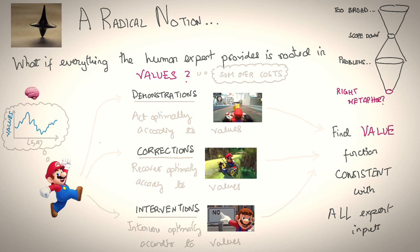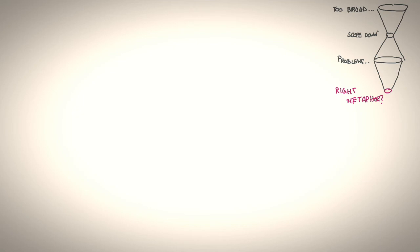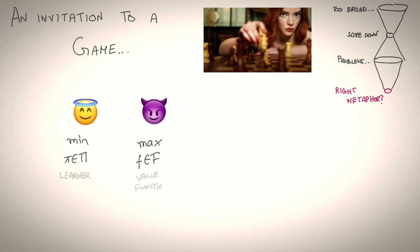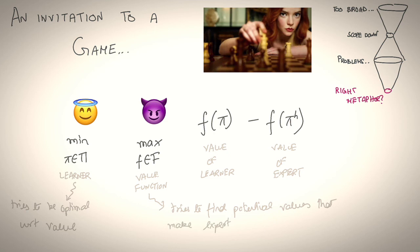So how does one act upon this insight? We invite you to think of imitation learning through the lens of a game. This is a game between two players, a learner and an adversary. The learner reasons over a space of policies pi, and the adversary reasons over a space of value functions. The payoff of the game is the value of the learner minus the value of the expert. From the learner's perspective, it's simply trying to be optimal with respect to the value function chosen by the adversary. On the other hand, the adversary tries to find potential value functions that make the expert look much better than the learner. Any policy that's at the equilibrium of this game is set to imitate the expert. That is our framework.